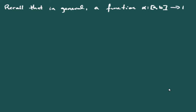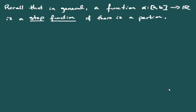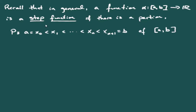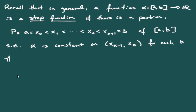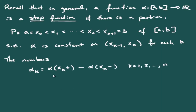Moving toward our goal of applying this to more general step functions, let's recall the definition. A function α on [A, B] is a step function if there is a partition A = x₀ < x₁ < … < x_{N+1} = B such that α is constant on each open subinterval (x_{k-1}, x_k). The jumps α_k are defined as the right-hand limit minus the left-hand limit of α at each x_k.